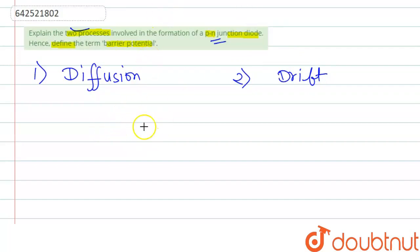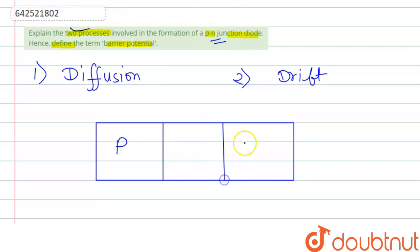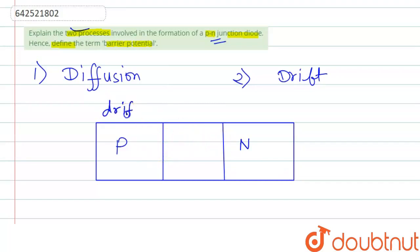If we try to understand these two using a diagram — let's say this is the P-type and this side is the N-type — we have the drift of electrons from the P side to the N side.